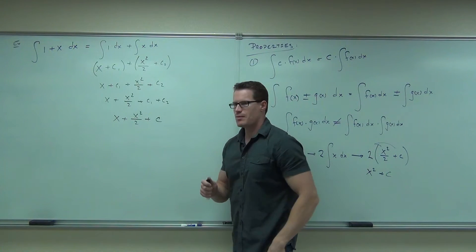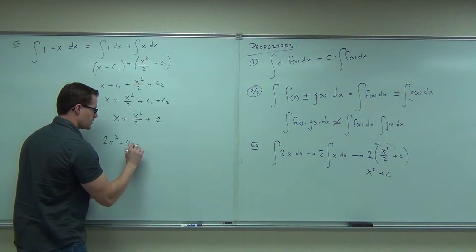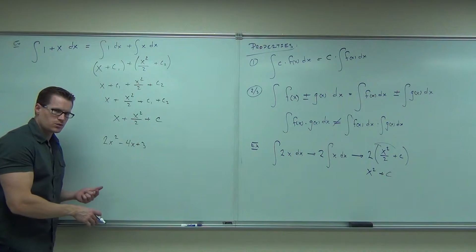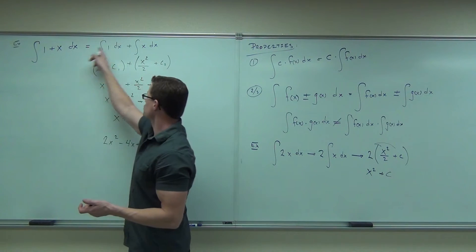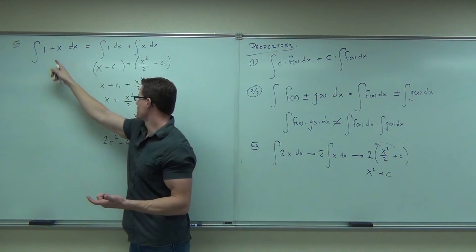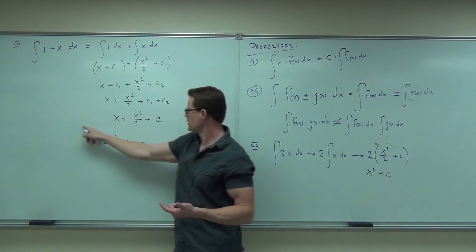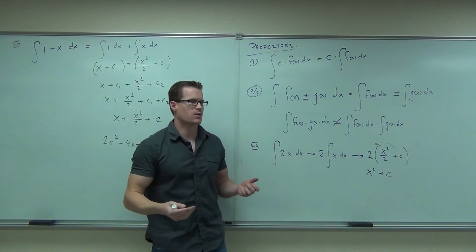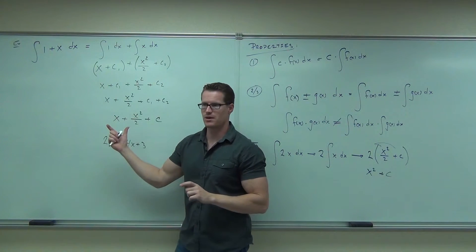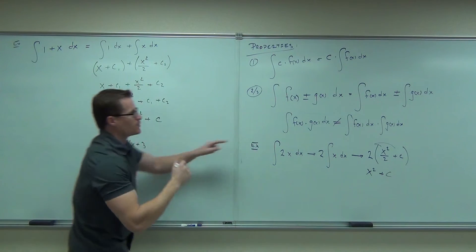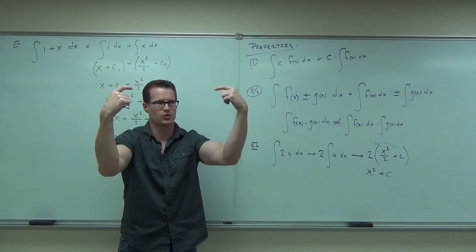One last thing: just like with derivatives — for example, taking the derivative of 2x squared minus 4x plus 3 — you didn't split it up term by term, you just did it directly. You can do the same thing with integrals: you can go directly from the expression to the answer. What you can't do is split multiplication: you can't take the integral of this times the integral of that. That doesn't work at all.